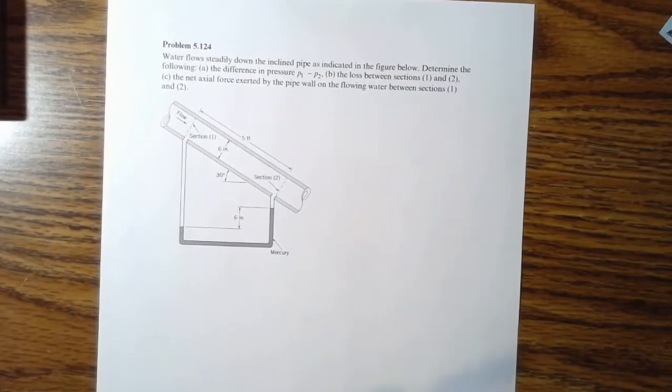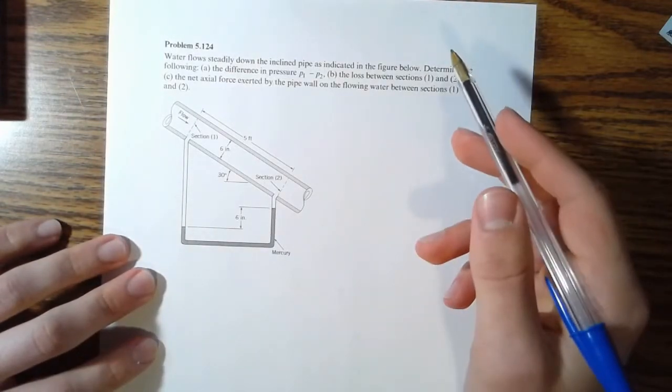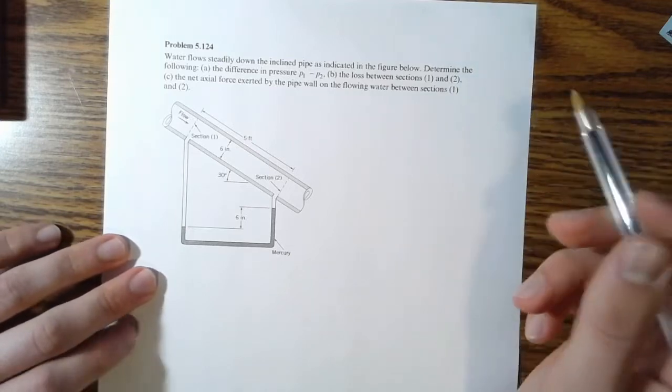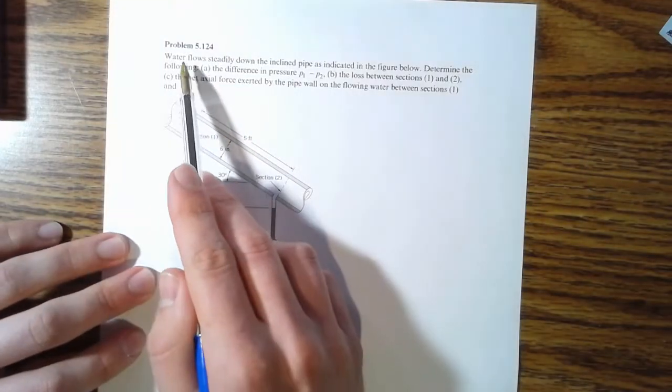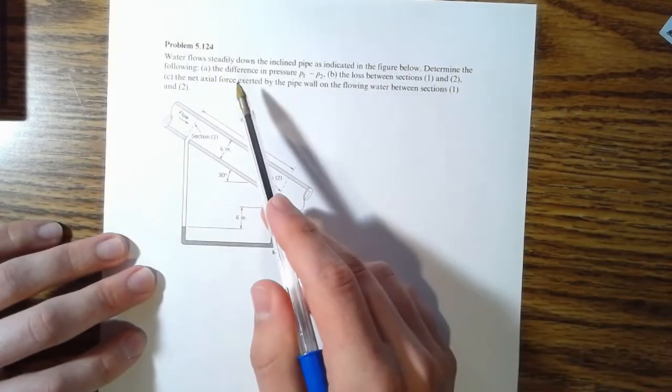All right. So we have a pretty good problem today here because it involves a decent amount of problem solving. So we'll get right into it. So you have water flowing steadily down an inclined pipe. Determine the following.